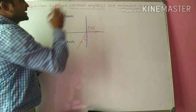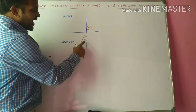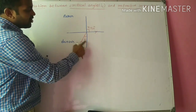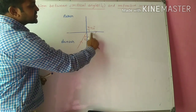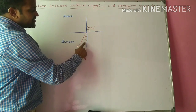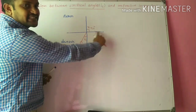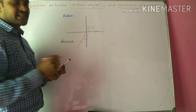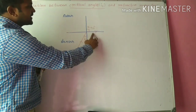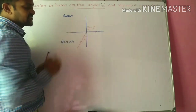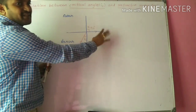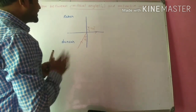Now we define critical angle: the angle of incidence for which the angle of refraction is 90 degrees, or the angle of incidence for which the refracted ray just grazes the surface, is called the critical angle. Once again, critical angle is the angle of incidence for which the angle of refraction in the rarer medium is 90 degrees.